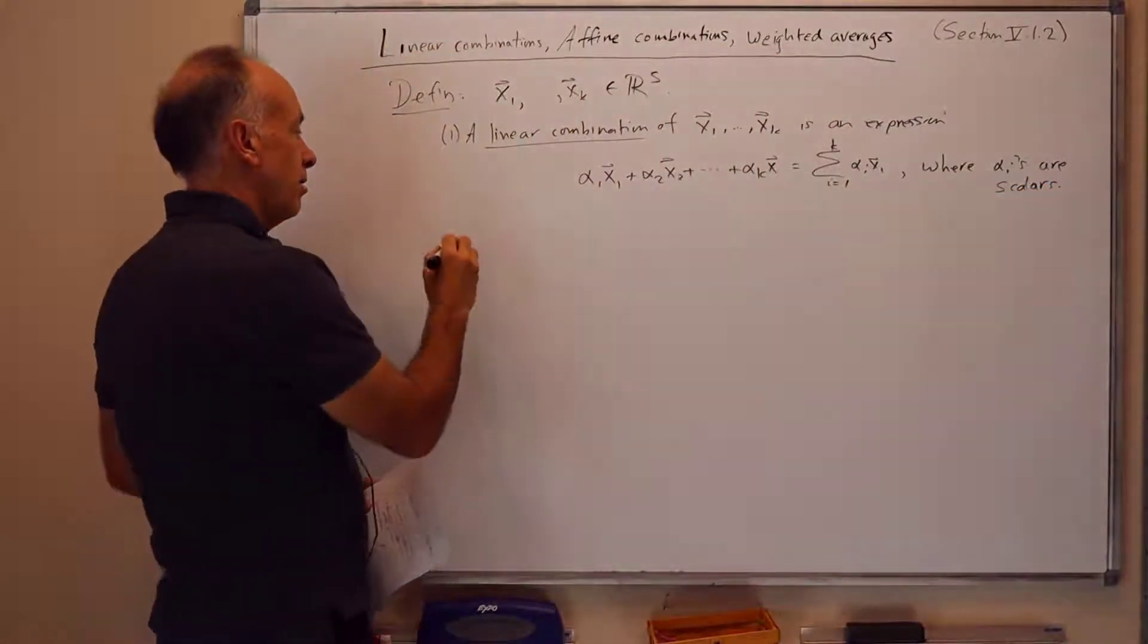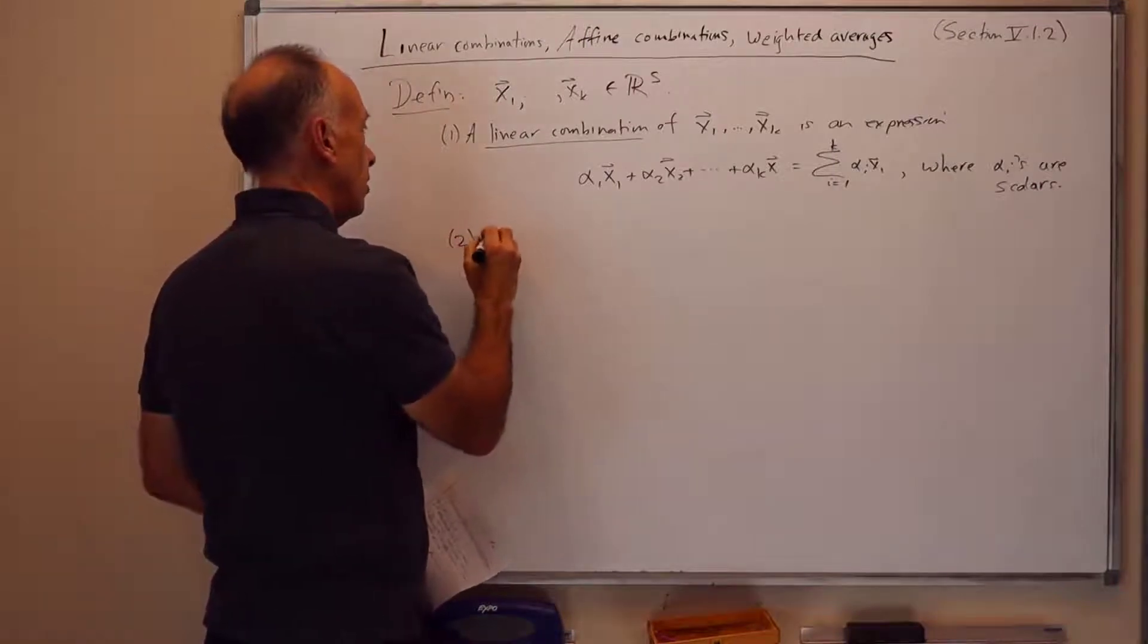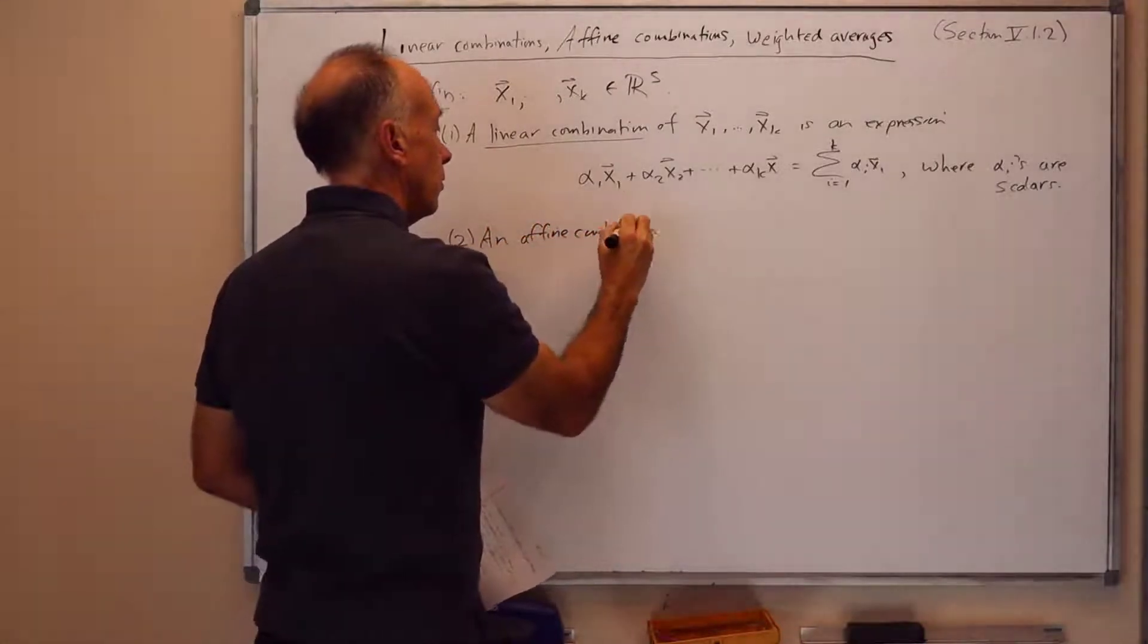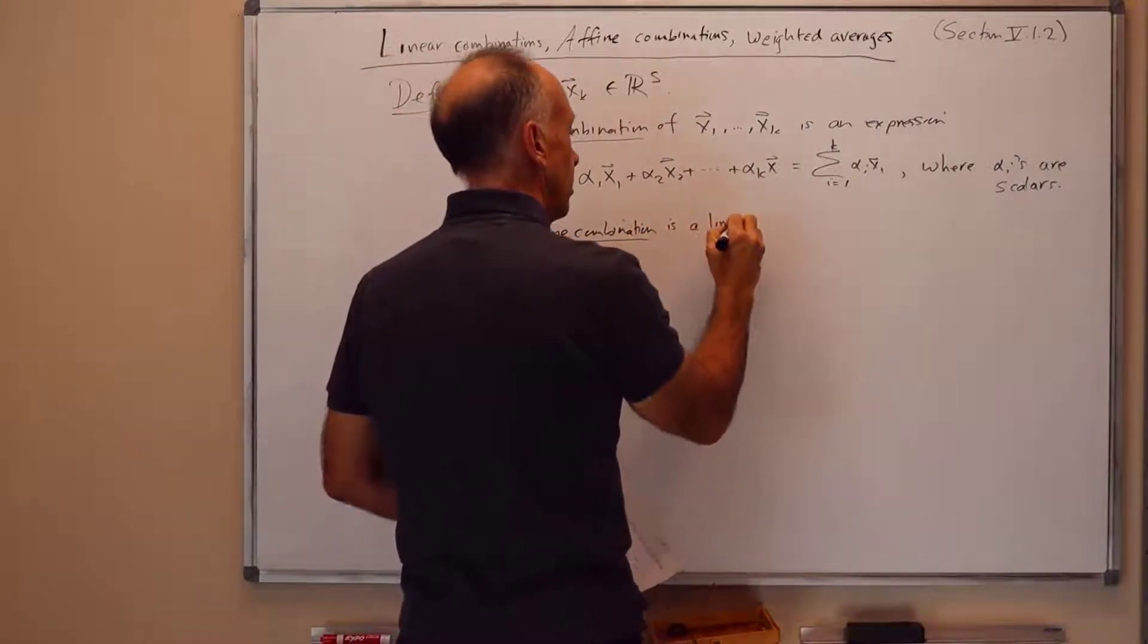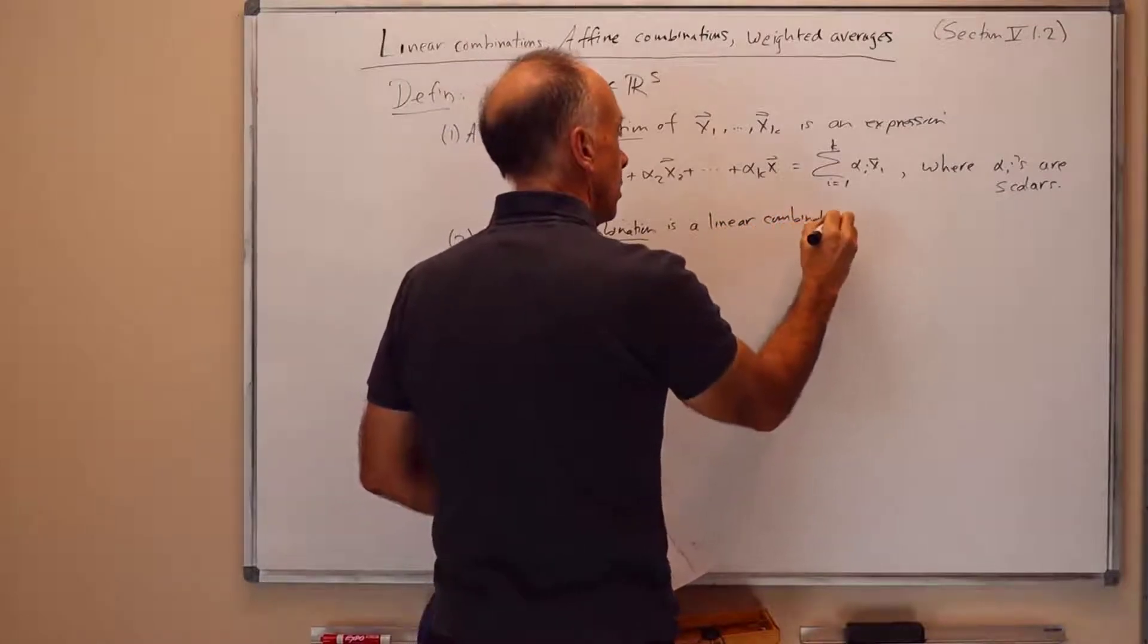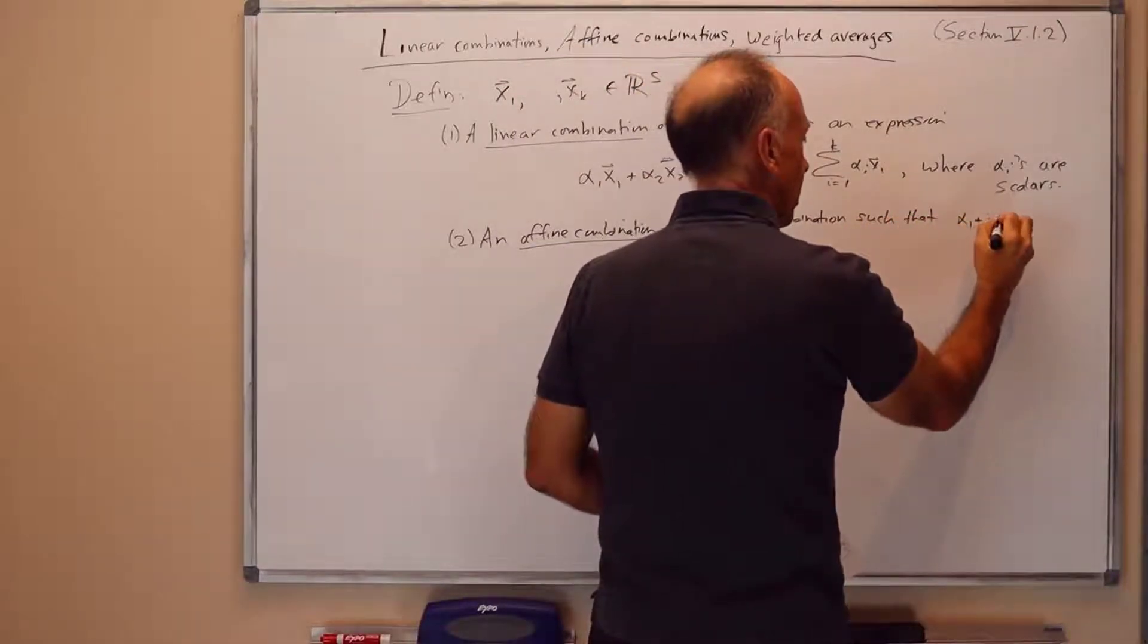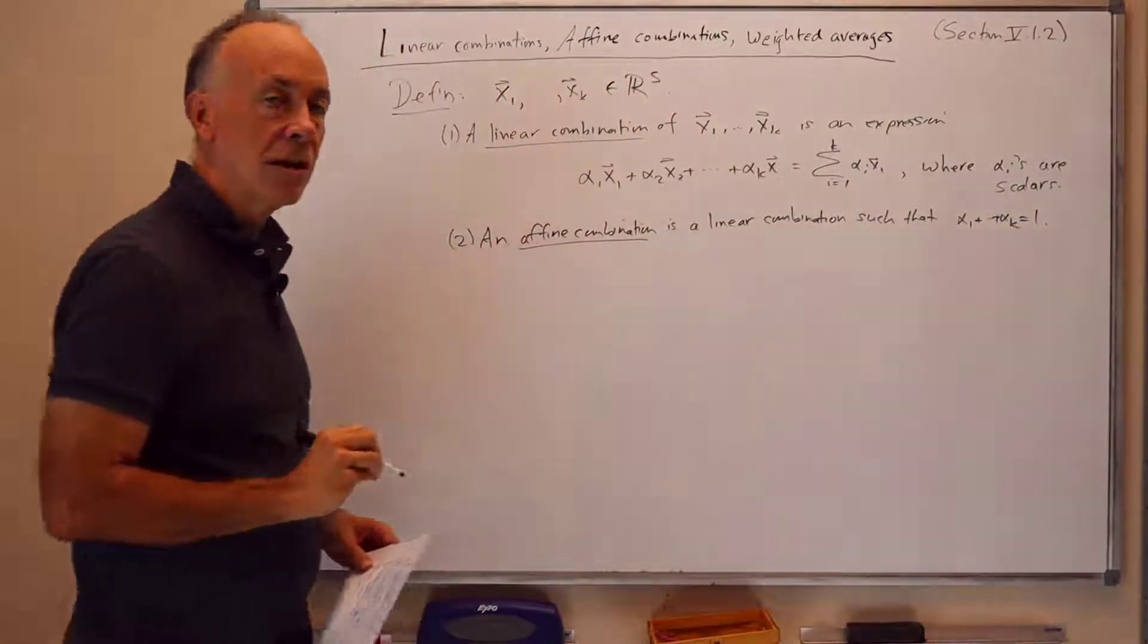A linear combination is an affine combination if the coefficients sum to 1. So an affine combination is a linear combination of the above form such that alpha 1 plus alpha 2 plus alpha k equals 1. So the coefficients sum to 1.